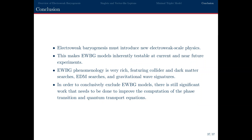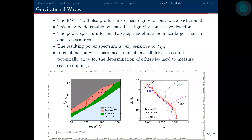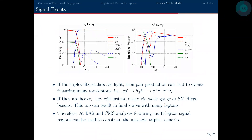Thank you very much, Leon. Does anyone have a question? [Questioner]: The triplet VEV being different from zero could contribute to neutrino masses and mixing angles — is there a model where the triplet gives neutrino masses? [Leon]: I think that's a triplet with hypercharge, not a real triplet. For the real triplet in this minimal model, you can't get neutrino masses. There are other related models which could give both neutrino masses and novel electroweak phase transitions, but not with the minimal real triplet.